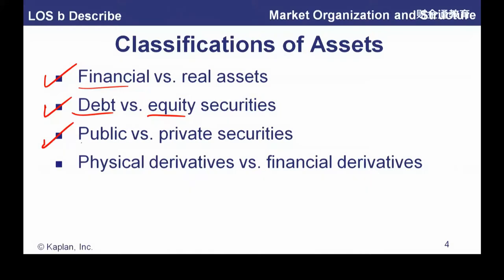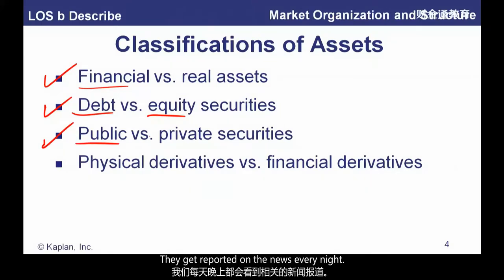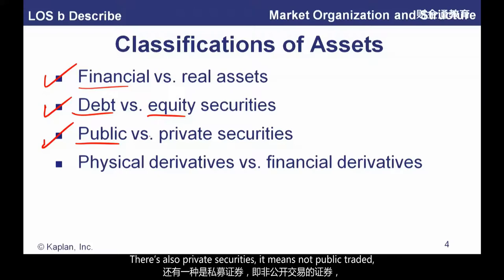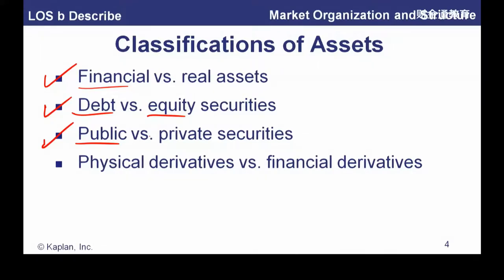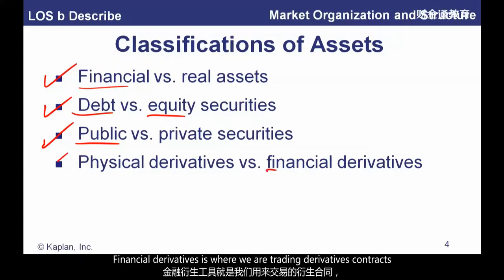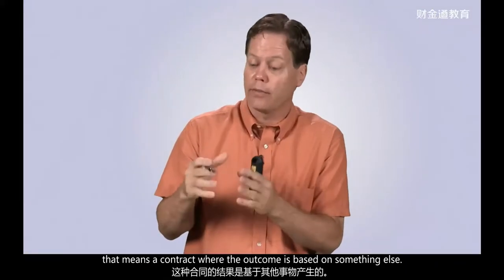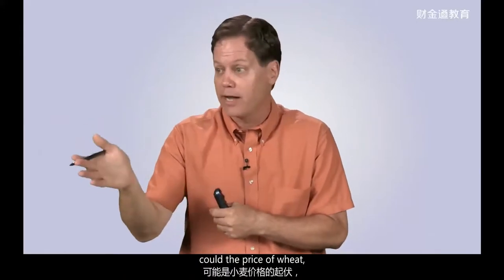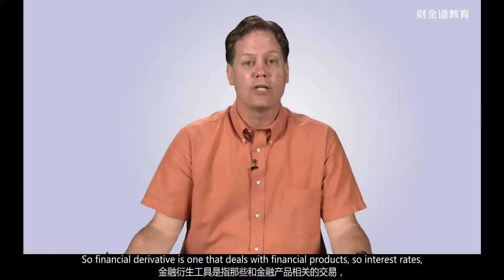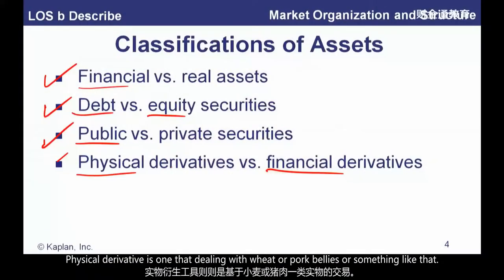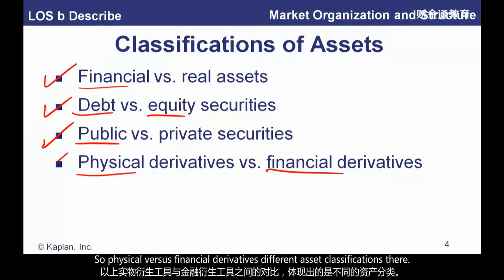Public versus private securities: public securities are publicly traded — they get reported on the news every night with the little ticker. Private securities are not publicly traded — you own a share of equity in the company, but it's private. And then physical derivatives versus financial derivatives: a derivative derives its value from something else in the economy. A financial derivative deals with financial products like interest rates, stocks, and bonds. A physical derivative deals with wheat, pork bellies, or something like that.